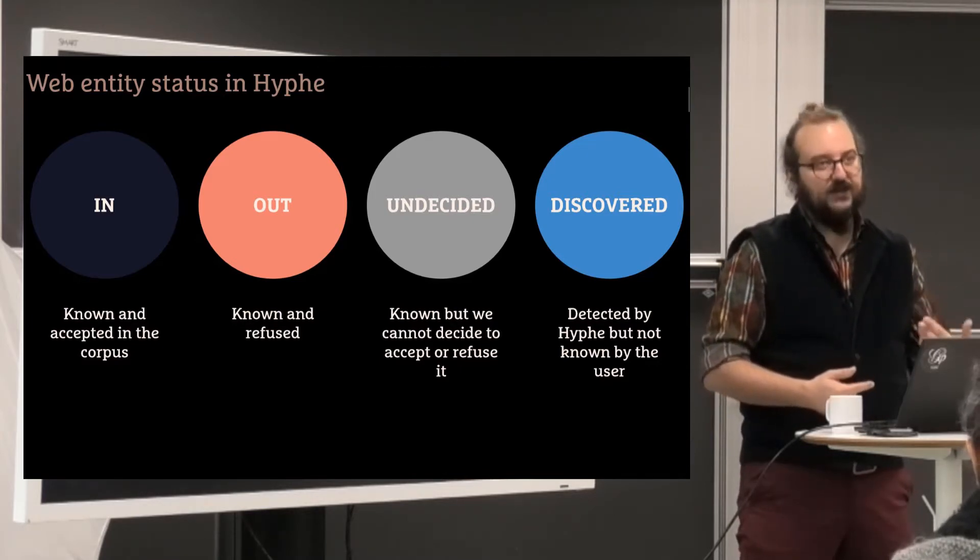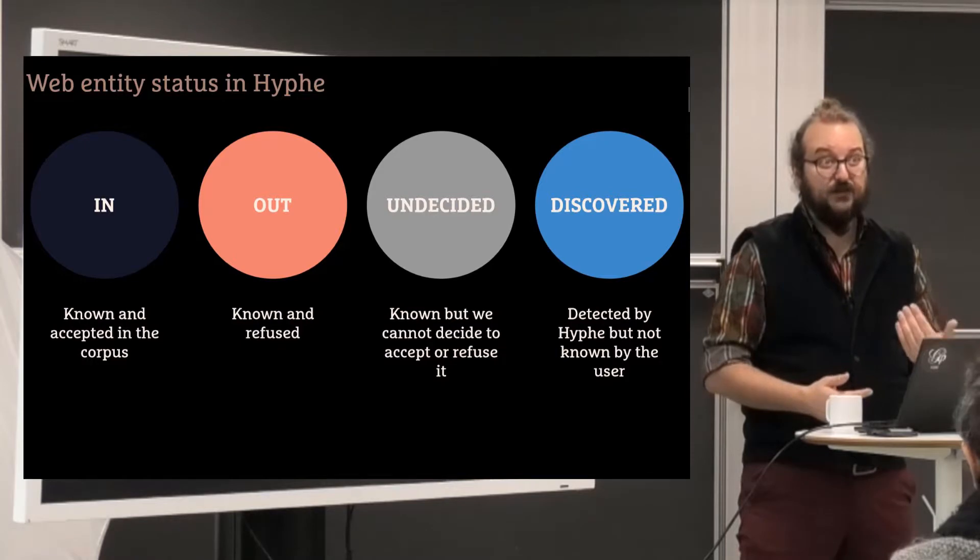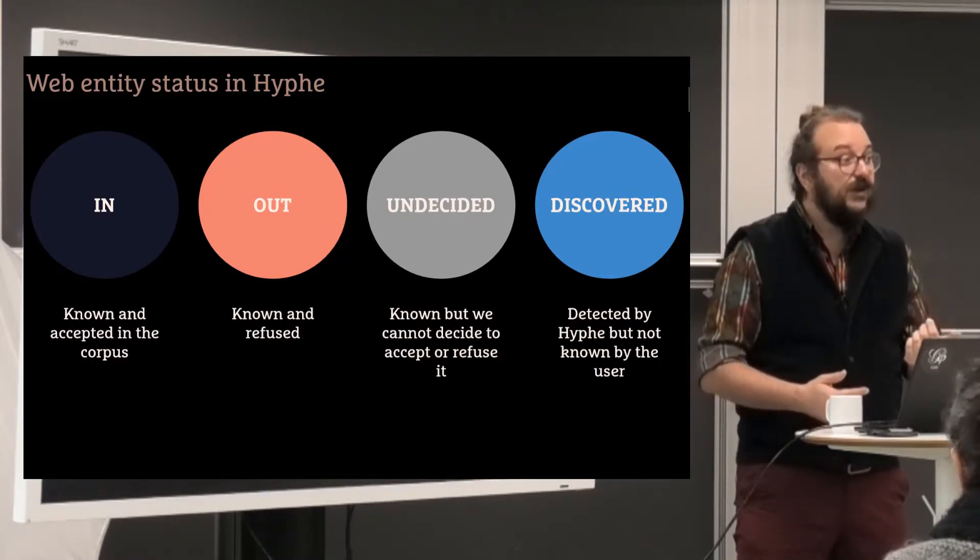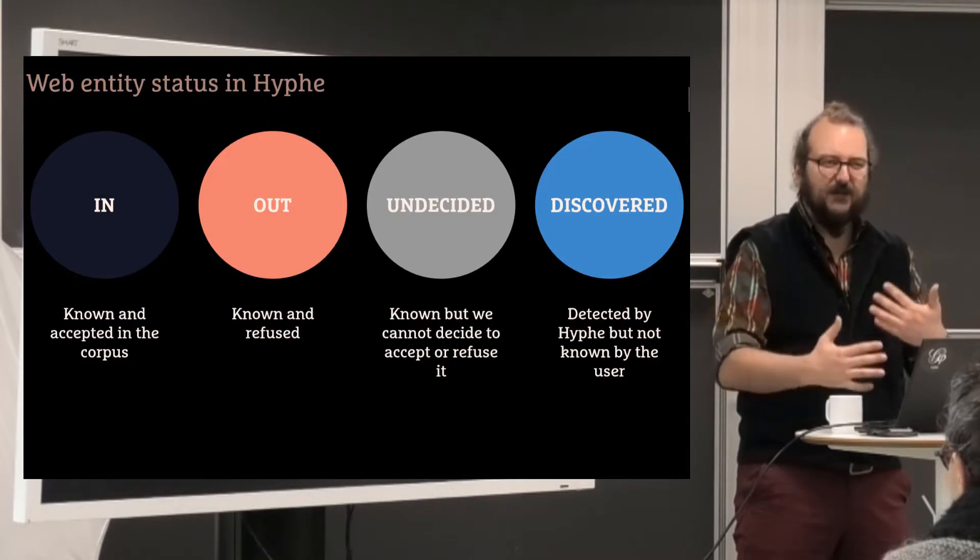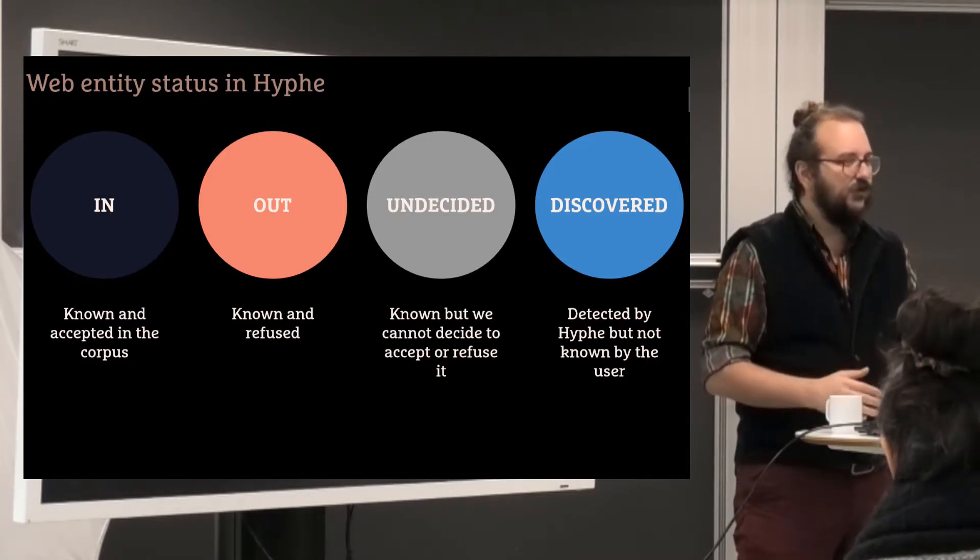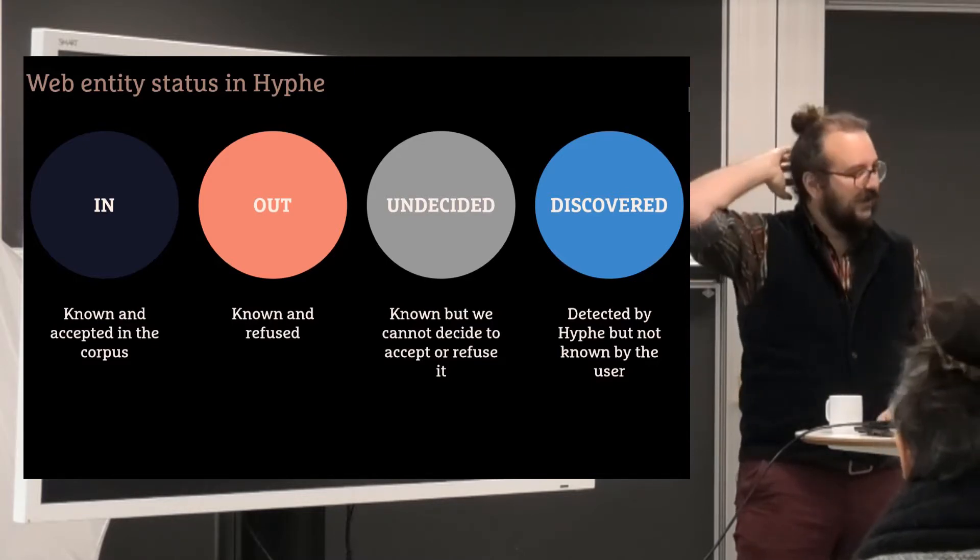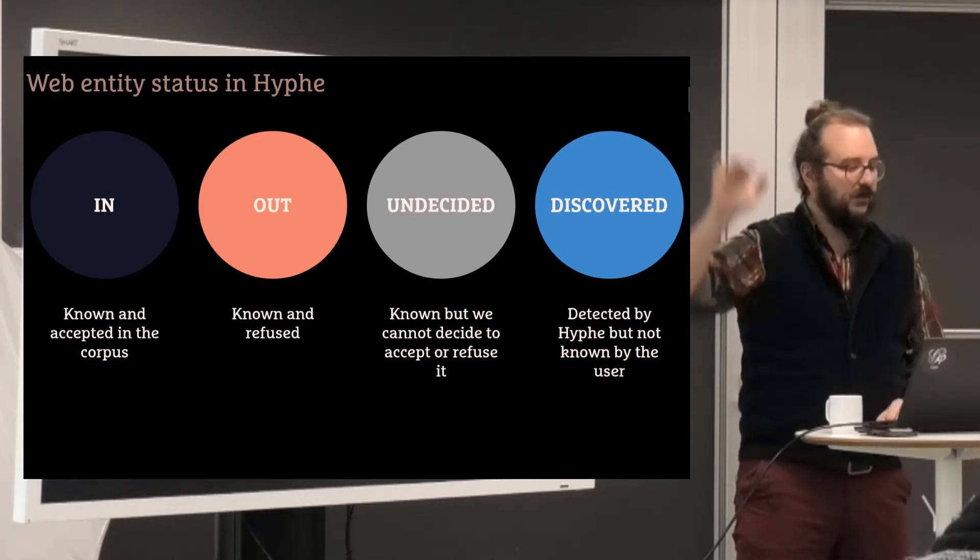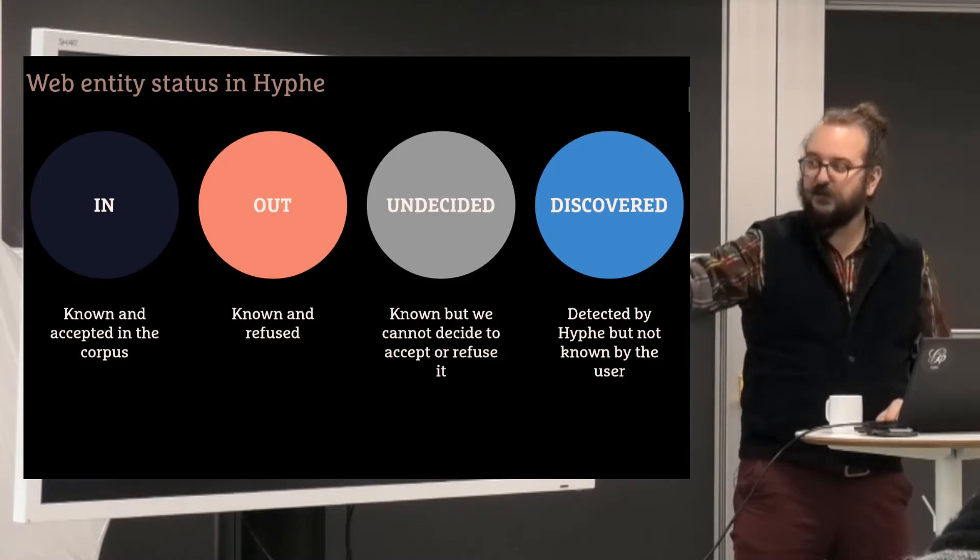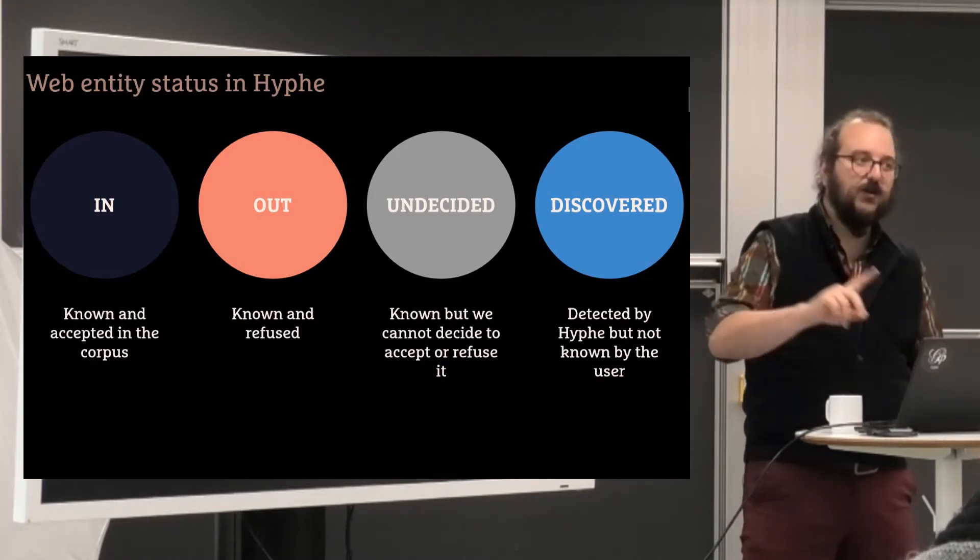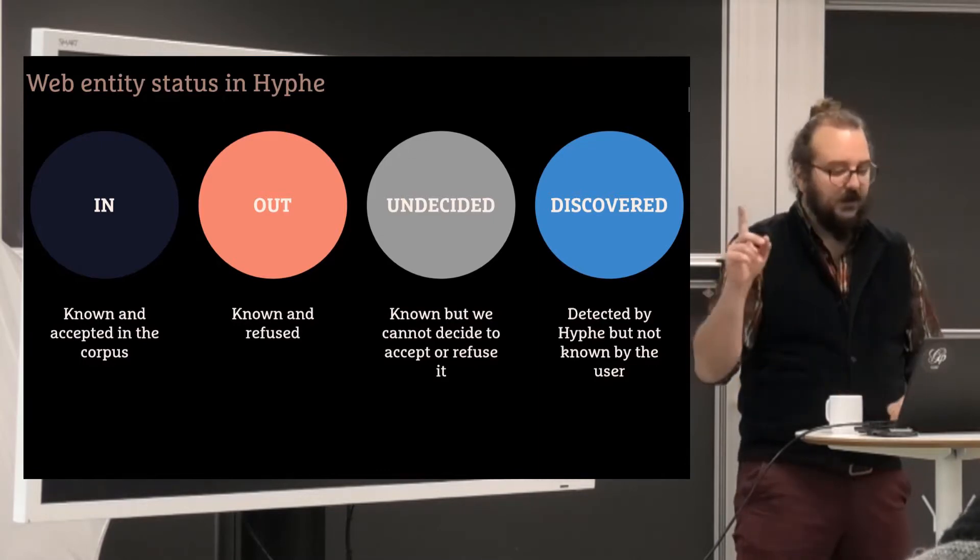Sometimes in the process, you can't decide at the moment if you want it or not because you are still reflecting on your criteria. So you have a kind of joker. You can say, I suspend my decision for the moment, and then the entity will become UNDECIDED until you pick it as IN or reject it as OUT.